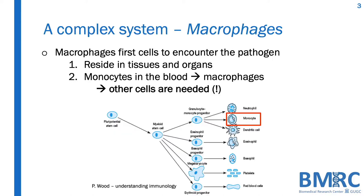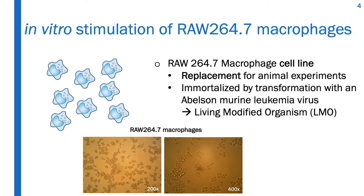Macrophages are one of the first cells to encounter pathogens in tissues and organs. Once stimulated by pathogens, they produce cytokines. In this video tutorial, we will use a modified macrophage cell line called RAW264.7. This cell line helps us to mirror the cellular response of in vivo macrophages.